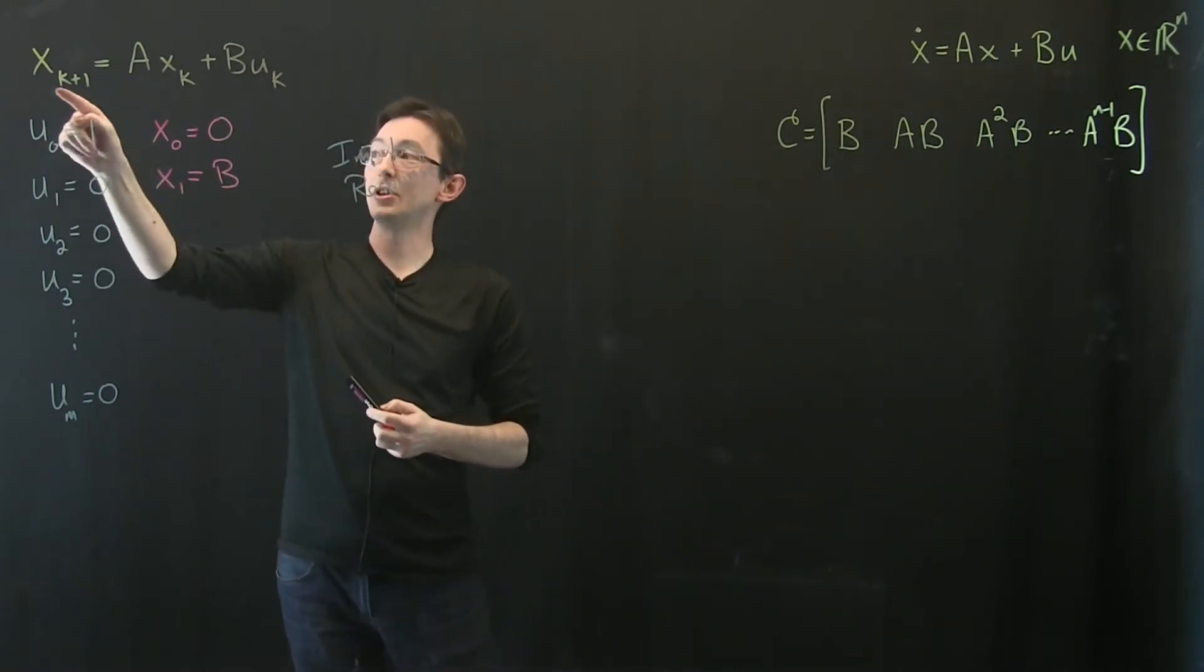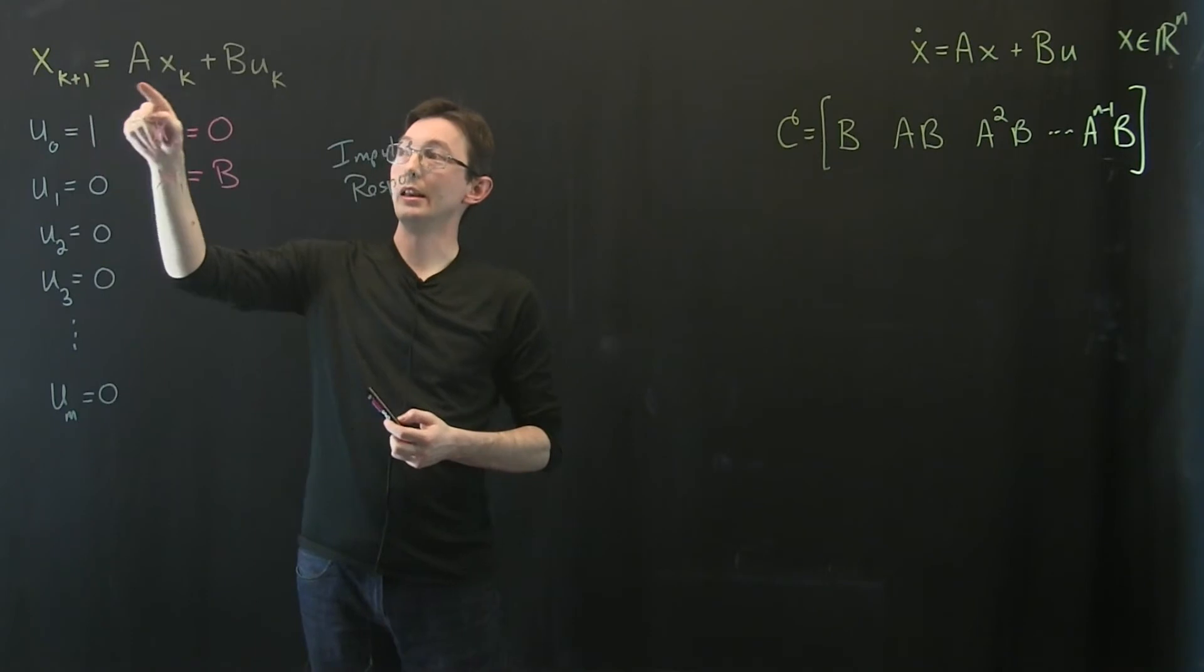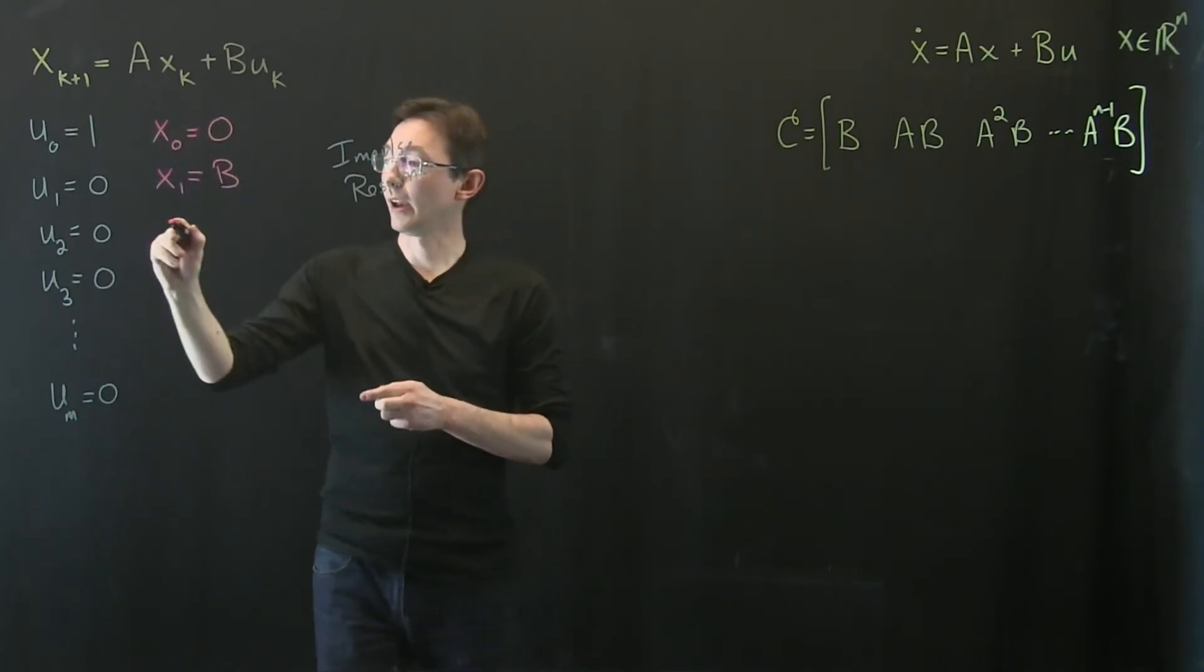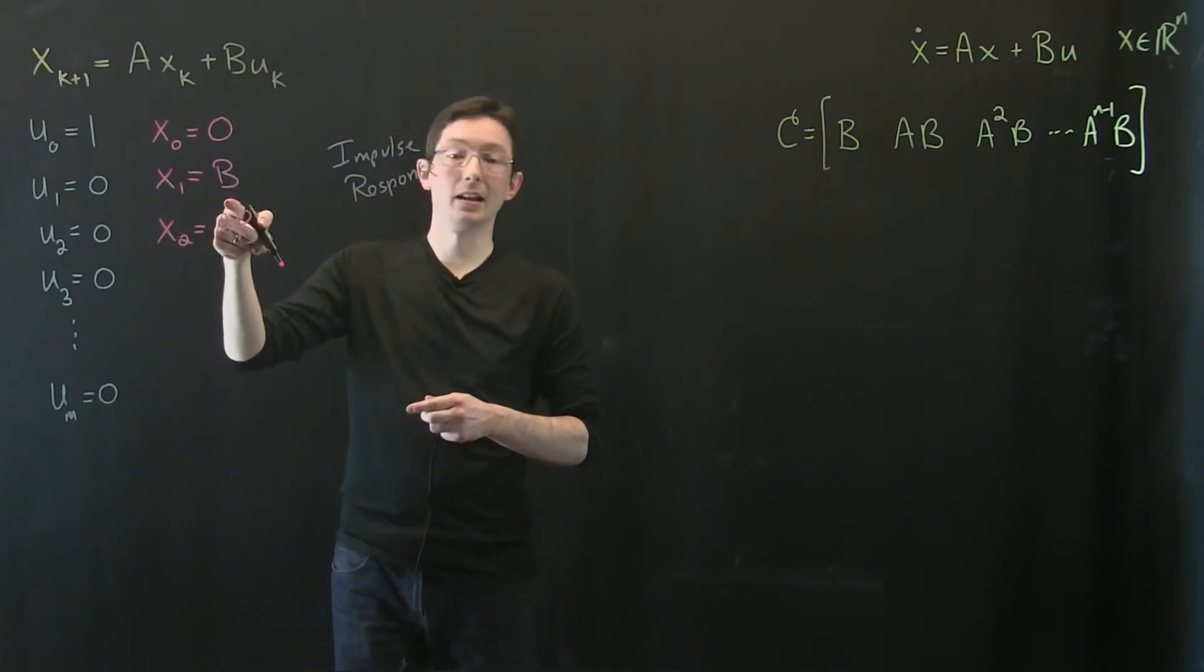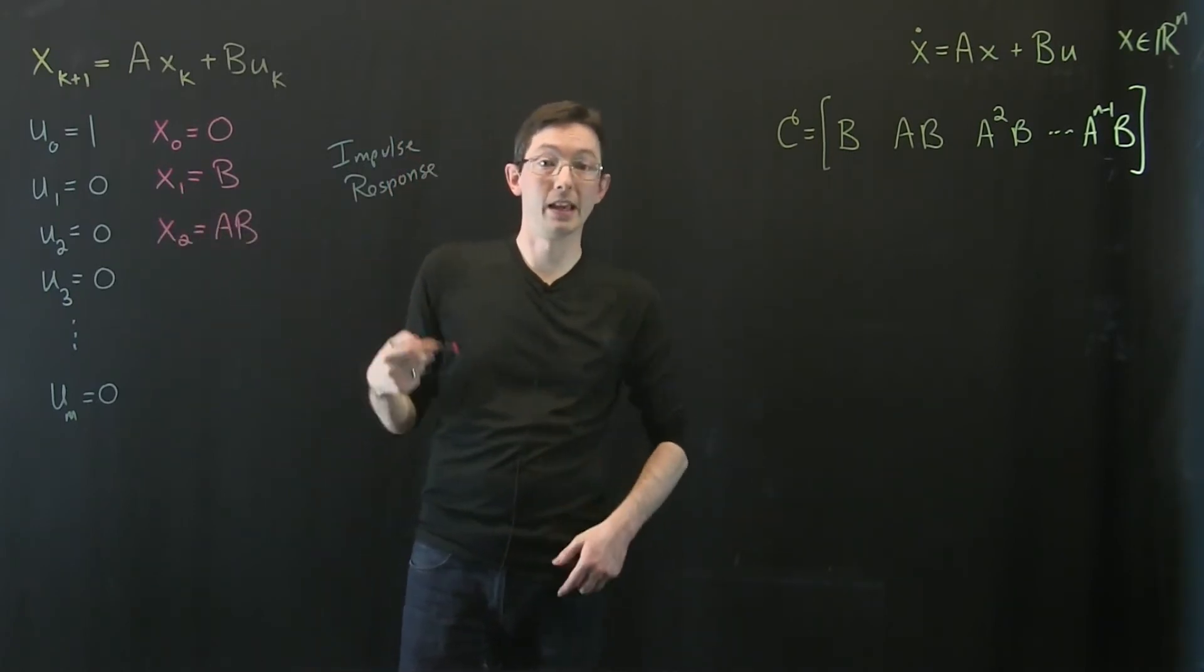Okay then at time 2, x of time 2 is just a of x at time 1. So x at time 2 is just a times x at time 1 which is b. So I get x2 equals ab.